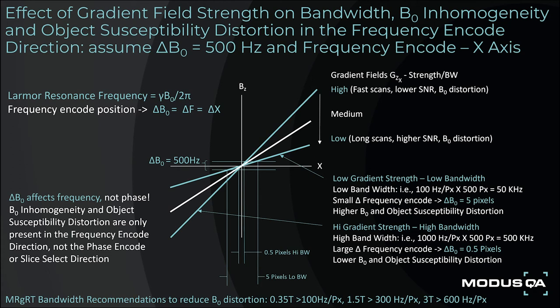In the example noted, a B0 perturbation equivalent to 500 Hz is assumed in the frequency encode direction. Scanning at 100 Hz per pixel and then 1000 Hz per pixel bandwidth is compared, showing B0 perturbation-related distortion is reduced from 5 pixels to 0.5 pixels. Recommendations for MRGRT scanning are bandwidth minimums of 100 Hz per pixel at 0.35 T, 300 Hz per pixel at 1.5 T, and 600 Hz per pixel at 3 T.